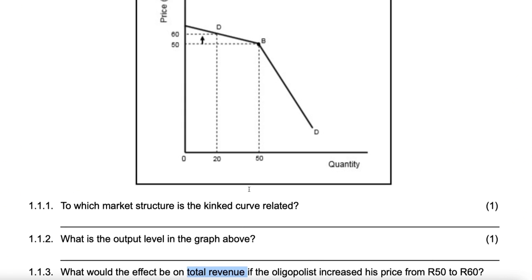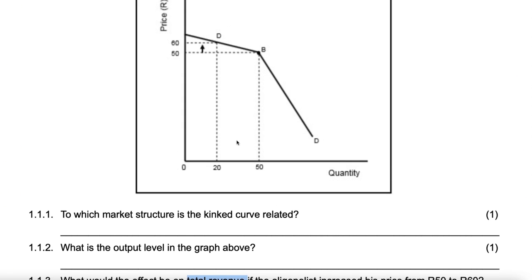If the price goes up from 50 to 60, let's first find total revenue before it goes up. So 50 times 50 equals 2,500.